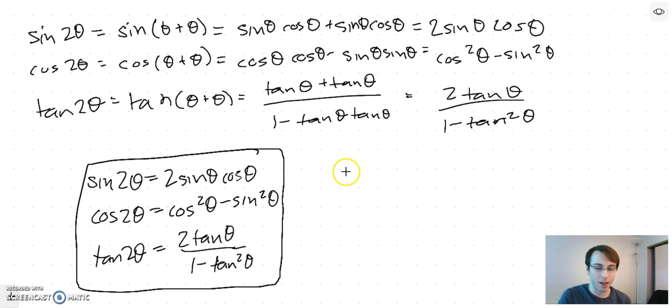There are also half angle formulas. We've got sine of θ/2 equals plus or minus square root of 1 minus cos θ over 2. The plus or minus is going to depend. You actually have to think about your angle here. Will this make sine positive or negative? It's not too difficult to think about.